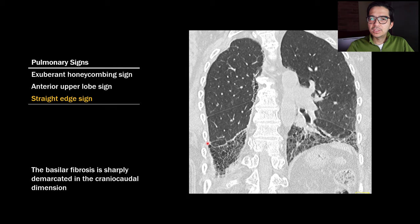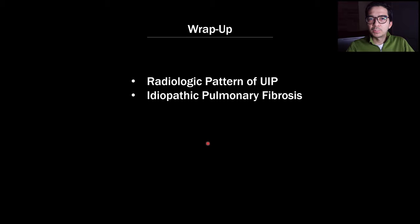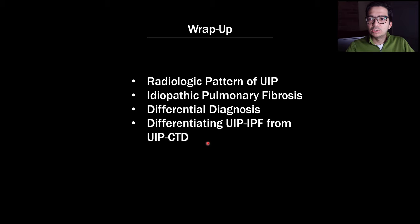To wrap up: we talked about the radiologic pattern of UIP and the different categories — UIP, probable UIP, indeterminate, and alternative diagnosis. We talked about the demographics of idiopathic pulmonary fibrosis, both the clinical and radiologic differentials for UIP, and ways to differentiate UIP-IPF from UIP associated with connective tissue disease — the exuberant honeycombing sign, the anterior upper lobe sign, and the straight edge sign. If you have any questions, please leave them in the comments below.